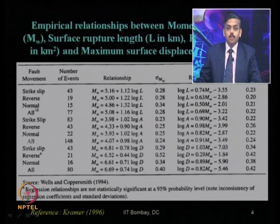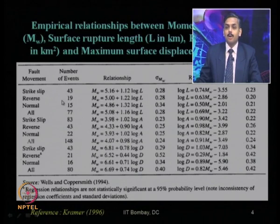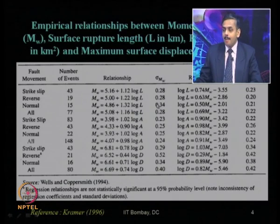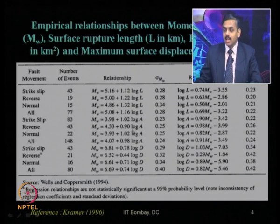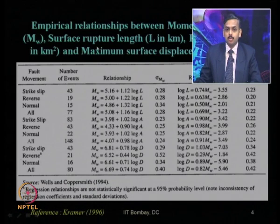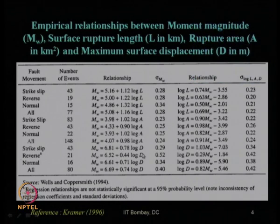While proposing these empirical relationships, they also provided the standard deviation for each equation. Among the proposed equations, the minimum standard deviation was with the rupture area equations, which are therefore considered the best. Second best are the equations with respect to surface rupture length L, and third are those with respect to maximum surface displacement.